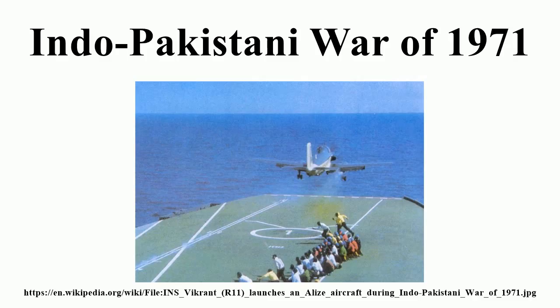Operation Trident was followed by Operation Python on the night of 8-9 December, in which Indian missile boats attacked the Karachi port, resulting in further destruction of reserve fuel tanks and the sinking of three Pakistani merchant ships. In the eastern theater of the war, the Indian Eastern Naval Command, under Vice Admiral Krishnan, completely isolated East Pakistan by a naval blockade in the Bay of Bengal, trapping the East Pakistani Navy and eight foreign merchant ships in their ports. From 4 December onwards, the aircraft carrier INS Vikrant was deployed, and its Seahawk fighter bombers attacked many coastal towns in East Pakistan, including Chittagong and Cox's Bazar. Pakistan countered the threat by sending the submarine PNS Ghazi, which sank en route under mysterious circumstances off the Visakhapatnam coast, reducing Pakistan's control of the Bangladeshi coastline.